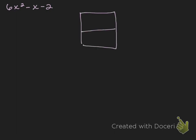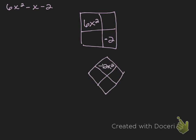Let's start with our generic rectangle. Just like before, we keep our x squareds together, so 6x squared goes in one corner and diagonally from that we put negative 2 — it's negative 2 because it says minus 2. The product of our missing boxes must equal 6x squared times negative 2, which is negative 12x squared. The sum we need is negative 1x. So I'm looking for two things that multiply to negative 12x squared but add to negative 1x, and that is negative 4x and positive 3x — the negative and positive give a negative product, and since there are more negatives than positives, the sum is negative too. I'll put negative 4x in one box and 3x in the other.